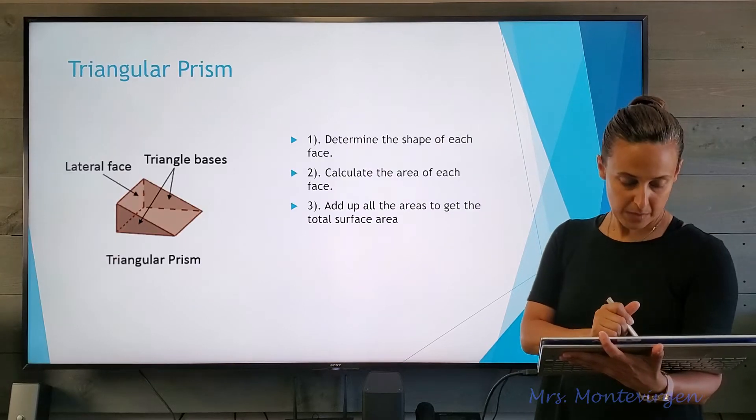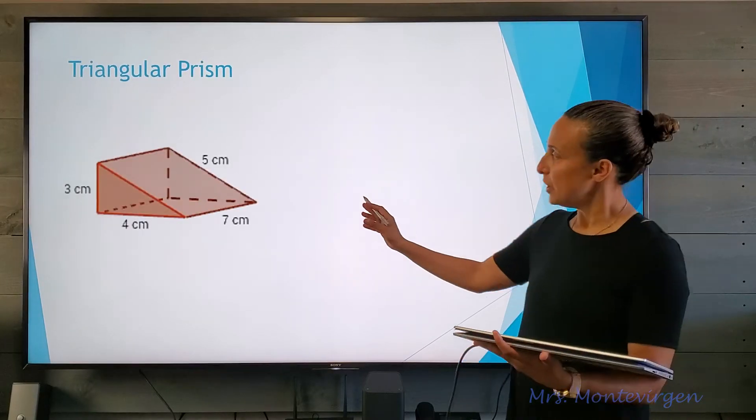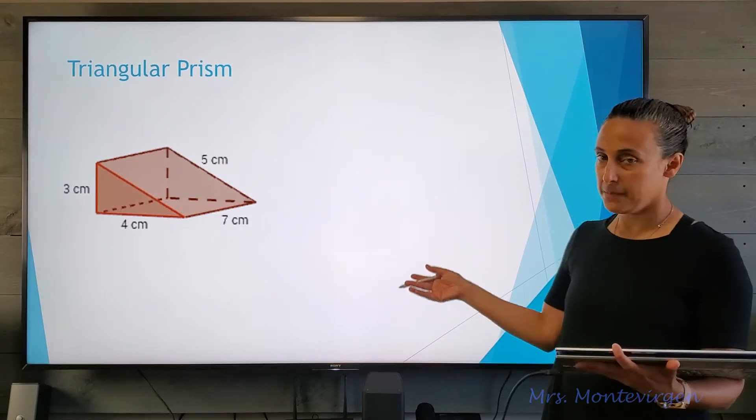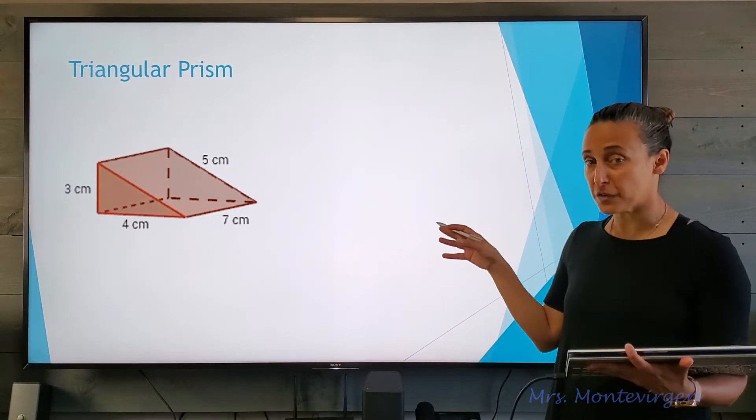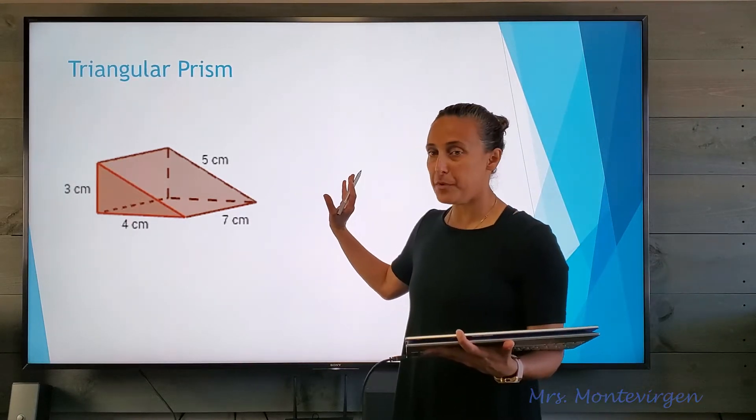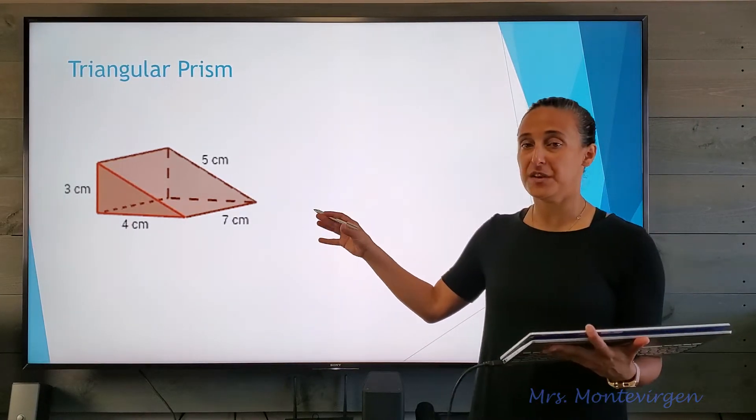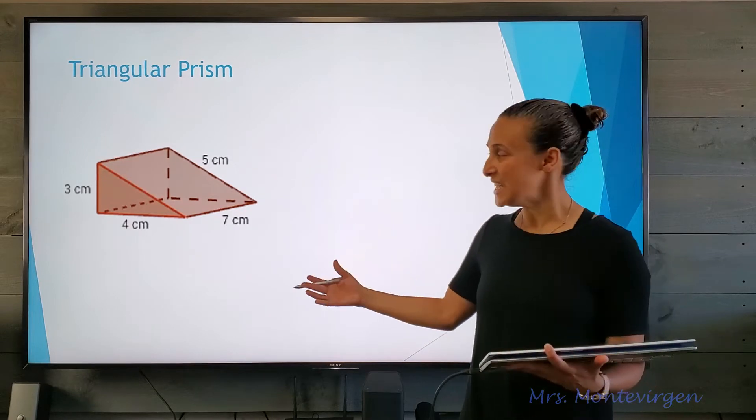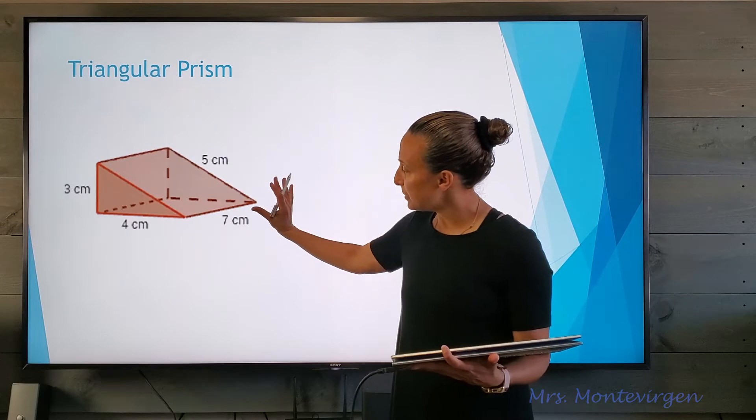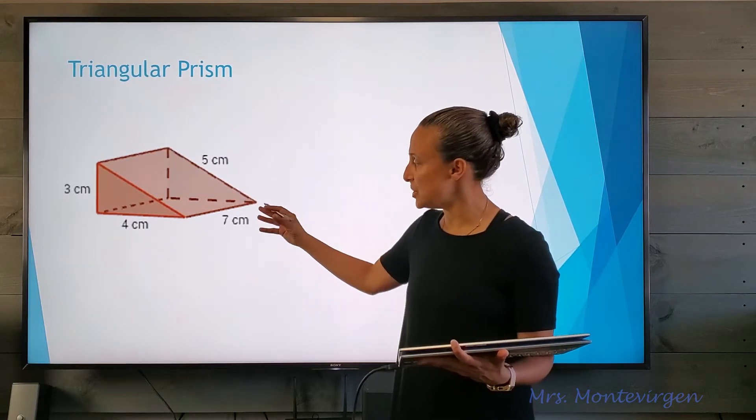This is an example of a triangular prism that we're going to be using, and we're going to be solving the surface area of this triangular prism together. Some people might need to take this 3D figure and draw it as an open net.